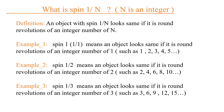Example 2: spin half means the object looks the same if it is rotated an integer number of 2 revolutions — 2, 4, 6, 8, 10, 12, and so on. Example 3: spin 1 over 3 means the object looks the same if it is rotated an integer number of 3 revolutions — 3, 6, 9, 12, 15, 18, and so on.